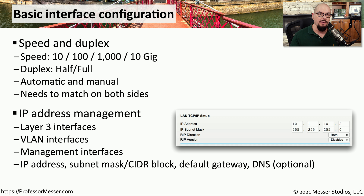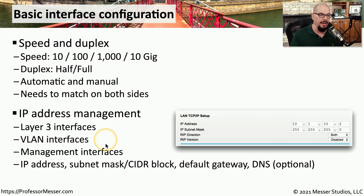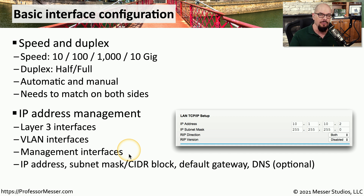Another important configuration is the layer 3 settings, or IP configurations. These would be set on layer 3 interfaces that may be on a firewall or a router, or it could be on VLAN interfaces configured inside of a switch. We can also set IP addresses on management interfaces so that you have a way to communicate with these infrastructure devices.